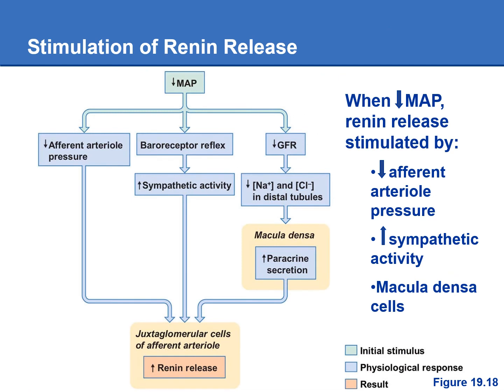In summary, renin is released from the granular cells of the juxtaglomerular apparatus when blood pressure gets too low, because renin stimulates the RAS system to increase blood pressure. There are three triggers for renin release: first, if the afferent arteriole blood pressure is too low, the granular cells sense that and release renin. Second, sympathetic neurons can tell the granular cells to release renin. Third, the macula densa cells — sensing sodium chloride in the distal convoluted tubule — secrete paracrines that both vasoconstrict the afferent arteriole and tell the juxtaglomerular cells to release renin.